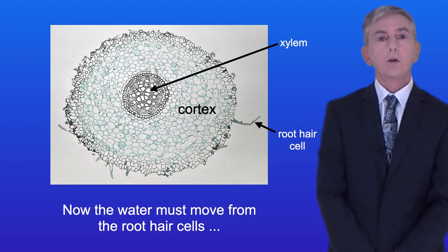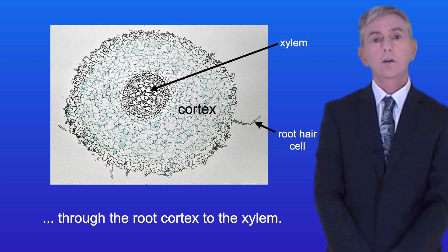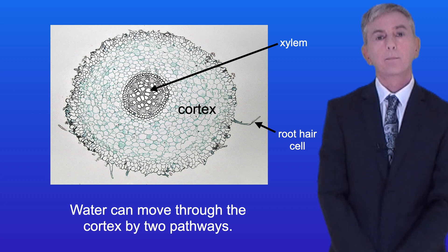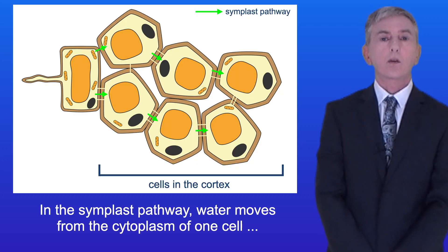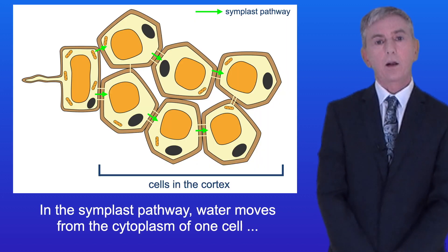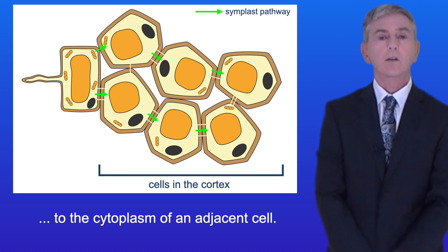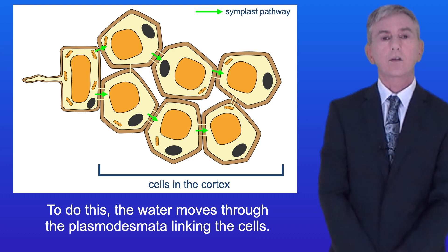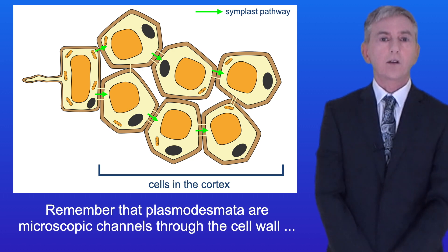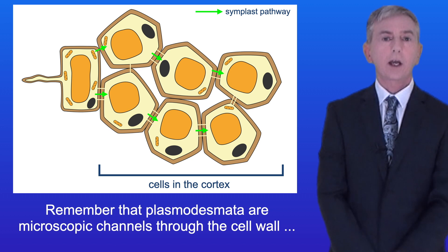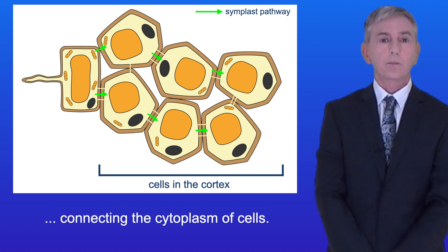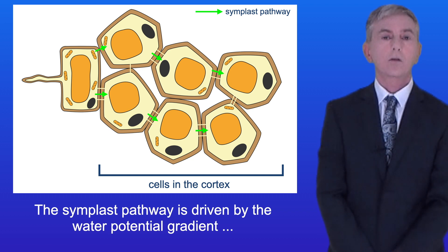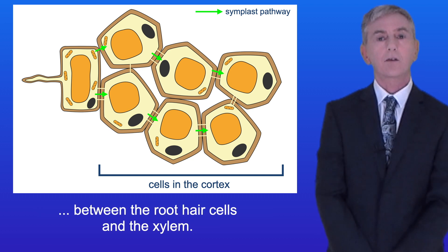Water must move from the root hair cells through the root cortex to the xylem, and it can move through the cortex by two pathways. In the Simplast pathway, water moves from the cytoplasm of one cell to the cytoplasm of an adjacent cell. To do this, water moves through the plasmodesmata linking the cells — microscopic channels through the cell wall connecting the cytoplasm of cells. The Simplast pathway is driven by the water potential gradient between the root hair cells and the xylem.